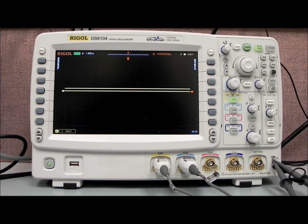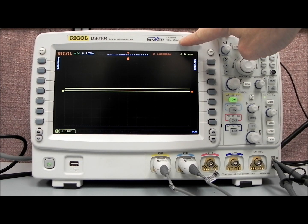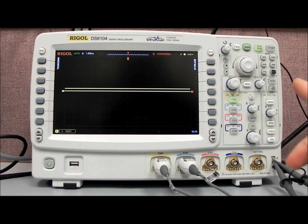This particular model that we have in front of us is the DS6104. The 6104 is a 1 GHz scope capable of 5 gigasamples per second sample rate, and it has 4 channels. So the 6104 denotes the 1 GHz, and then 4 denotes the number of channels available to us.